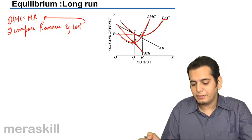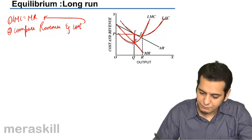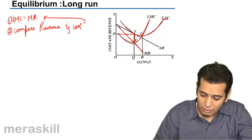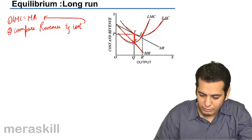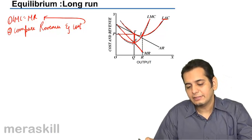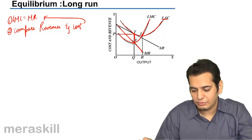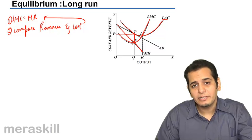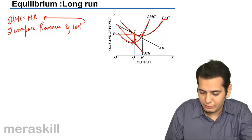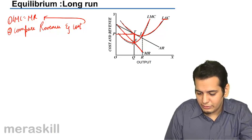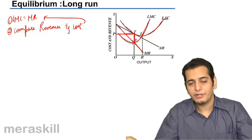Draw a perpendicular from that point to the Y axis. Now find out the cost. So from equilibrium move upwards till the long run average cost curve. Where it meets the long run average cost curve, it meets at the same point, that is point T. So you see that both revenues and cost at this point are same.